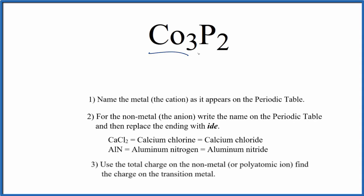To write the name for CO3P2, we first need to recognize that CO, that's cobalt, is a transition metal, and then P, the phosphorus, is a non-metal. So we're going to use these rules to write the name for CO3P2.